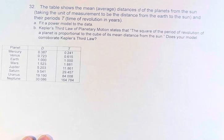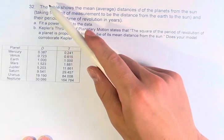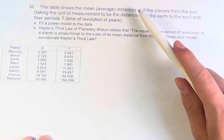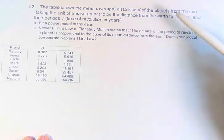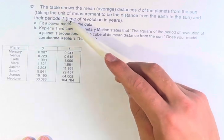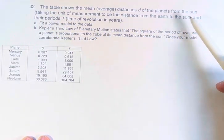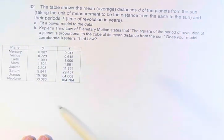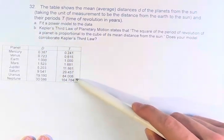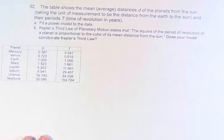Hello and welcome back to another video. In this problem, we're told that the table shows the mean average distances d of the planets from the Sun, taking their unit of measurement to be the distance from the Earth to the Sun, so Earth is one distance away, and their periods t, the time of revolution in years.